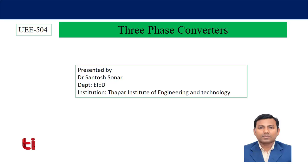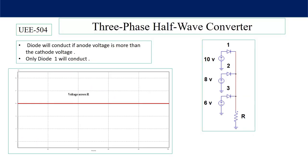Three-phase converters are very popular in high power industrial applications. To understand the triggering process of thyristors, recall that though three positive voltages are connected across three diodes, the diode having maximum voltage will conduct and the remaining two will remain off. In a three-phase full wave converter there will be six thyristors.